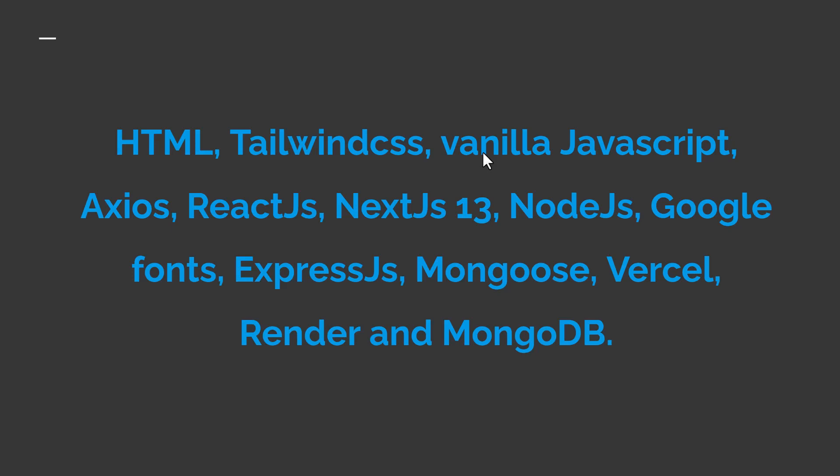We'll use Axios for data fetching. Next.js is basically React.js with extra superpowers — and we're going to be using Next.js 13, the new and awesome version. For the backend we'll use Node.js, Google Fonts for beautiful customizable fonts, and Express.js as the backend framework. We'll use Mongoose to communicate with and interact with our MongoDB database.